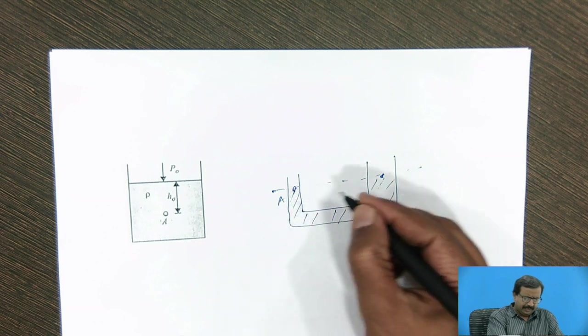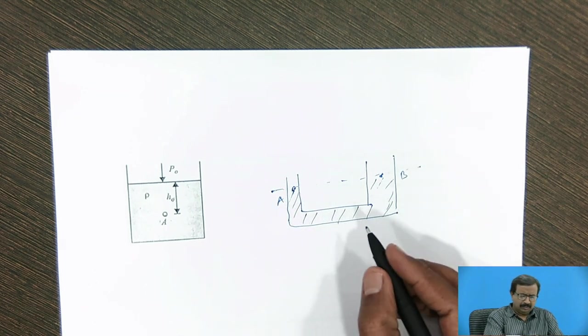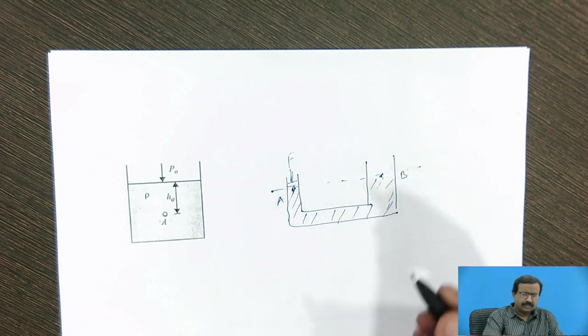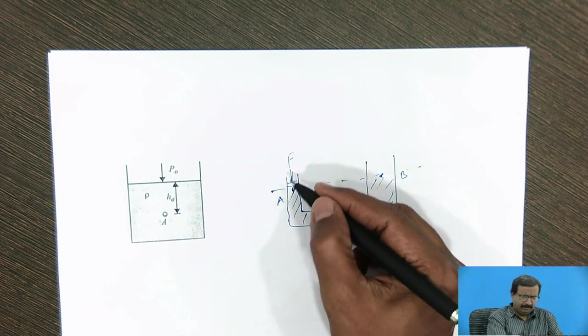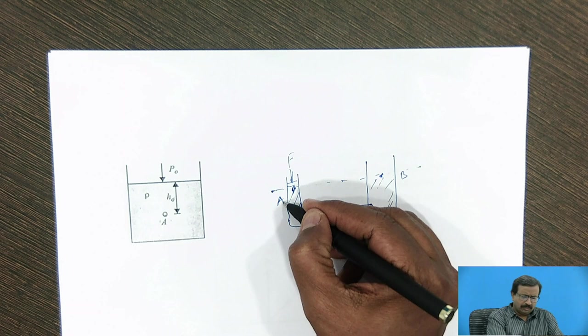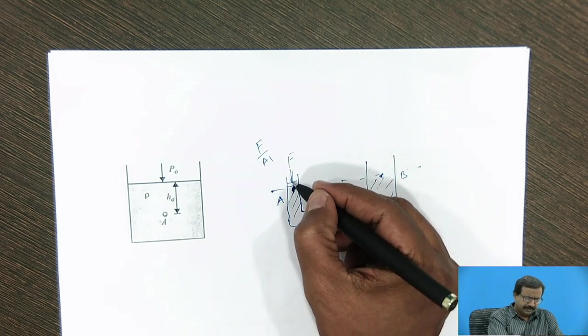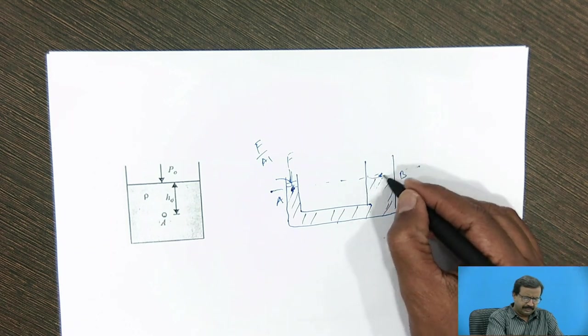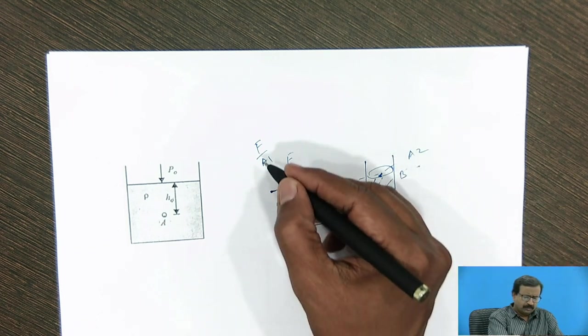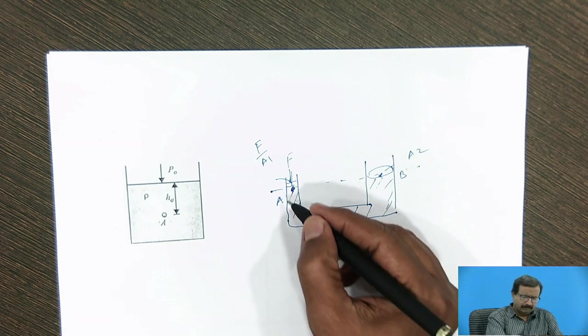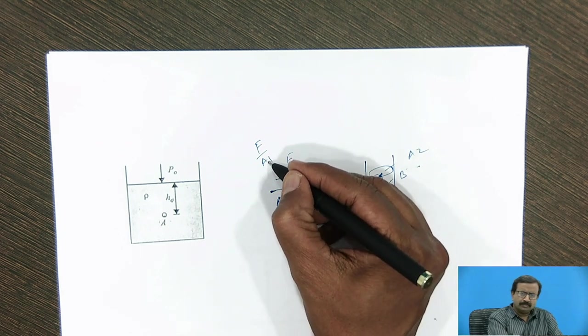Now, pressure at A and pressure at B is same. So what happens? If I apply here some force, so F upon A, A is small. So because F upon A₁, this area, area of this section is A₁, area of this section is A₂. So F upon A₁, when I apply it, then what happens? The pressure develop is large because A is small.